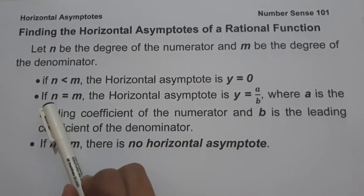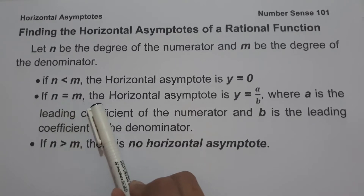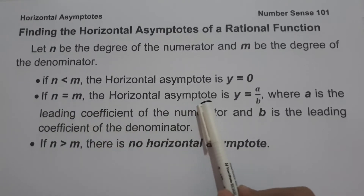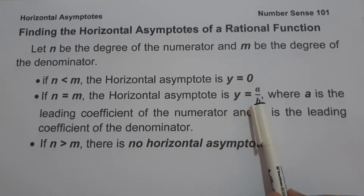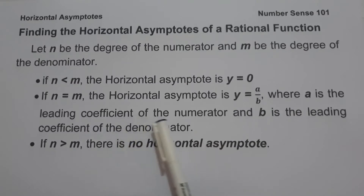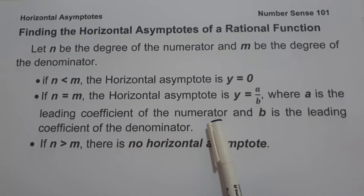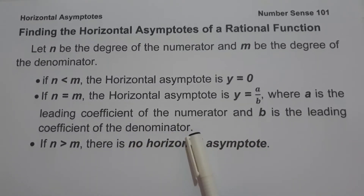The second one: if n equals m, the horizontal asymptote is y equals a over b, where a is the leading coefficient of the numerator and b is the leading coefficient of the denominator.